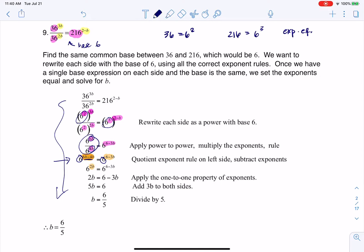So now let me go through my spiel again. When you have an exponential equation and the bases are the same, then you know that the exponents have to be the same, and that is a much nicer equation to solve. And I get b is equal to 6 fifths.